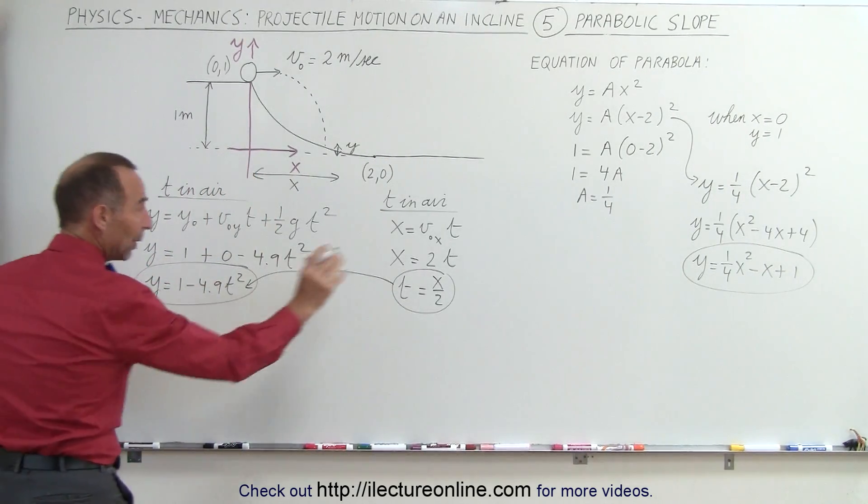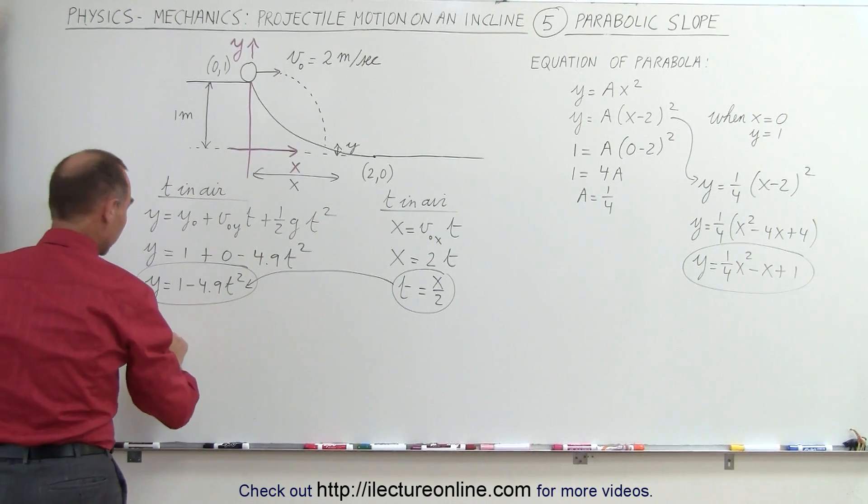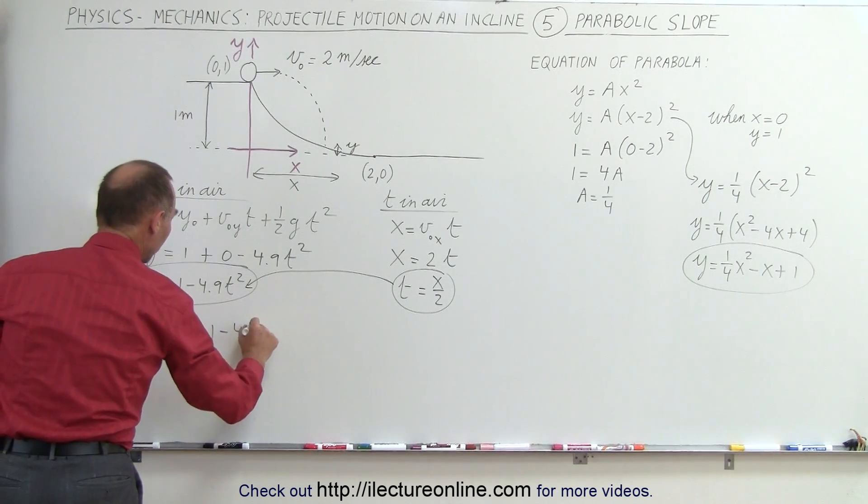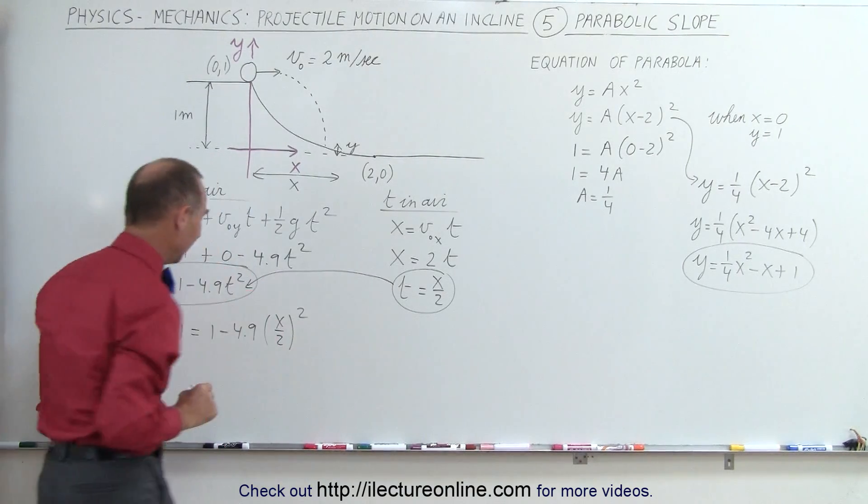So instead of y, we write what y is equal to, one quarter x squared minus x plus 1 equals 1 minus 4.9. And instead of t, we write x over 2. And of course, we need to square that.